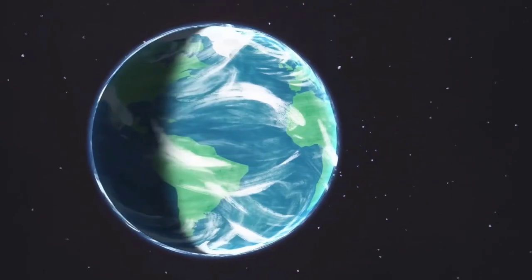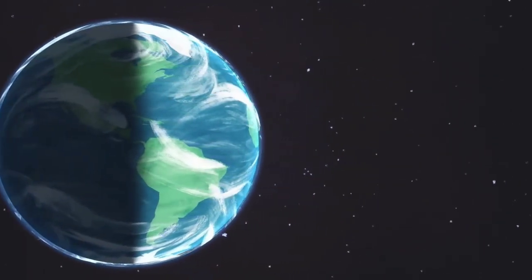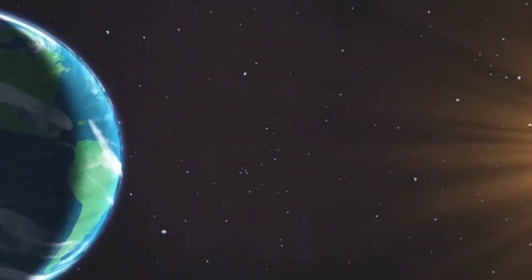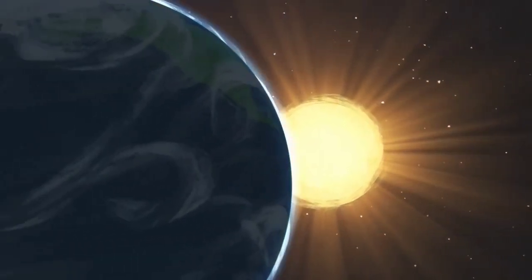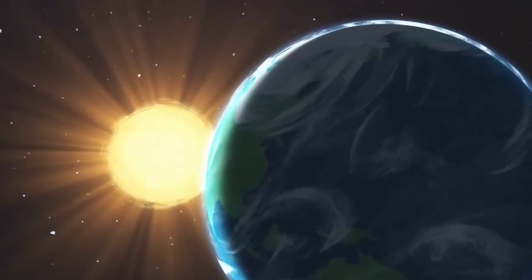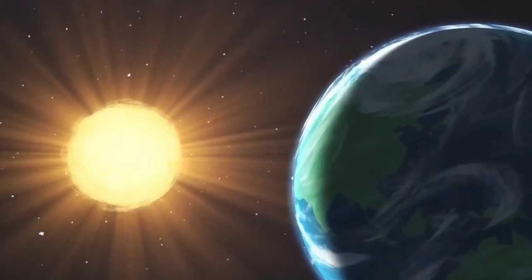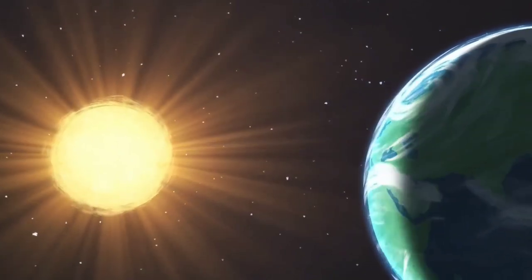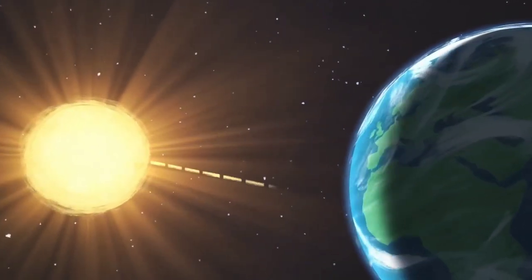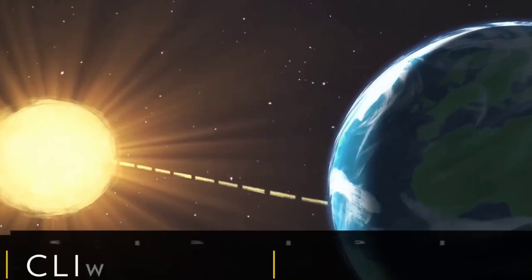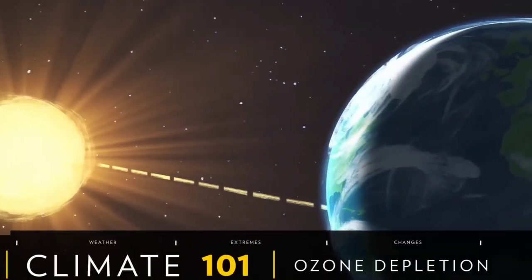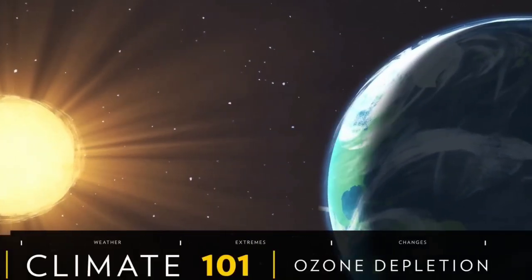High above us, a gas-filled ozone layer surrounds the planet. The ozone layer acts as a barrier between Earth and UV rays from the sun. However, pollution has caused the ozone layer to thin, exposing life on Earth to dangerous radiation.